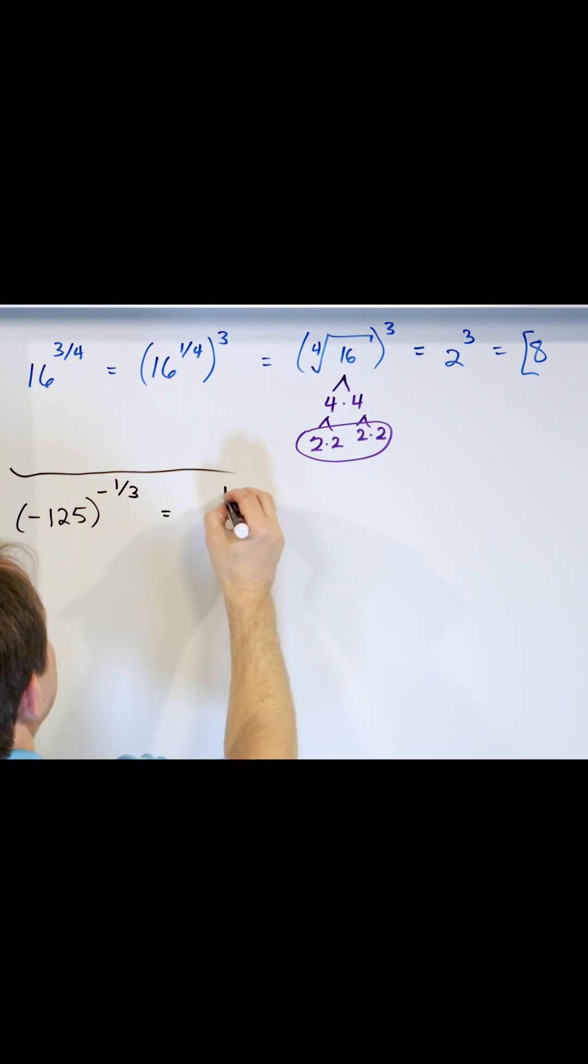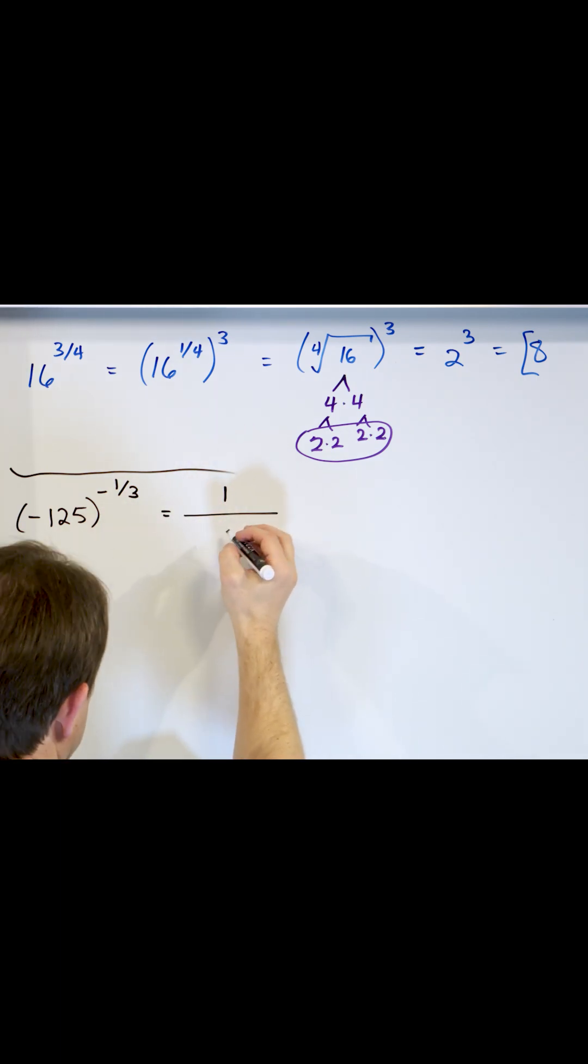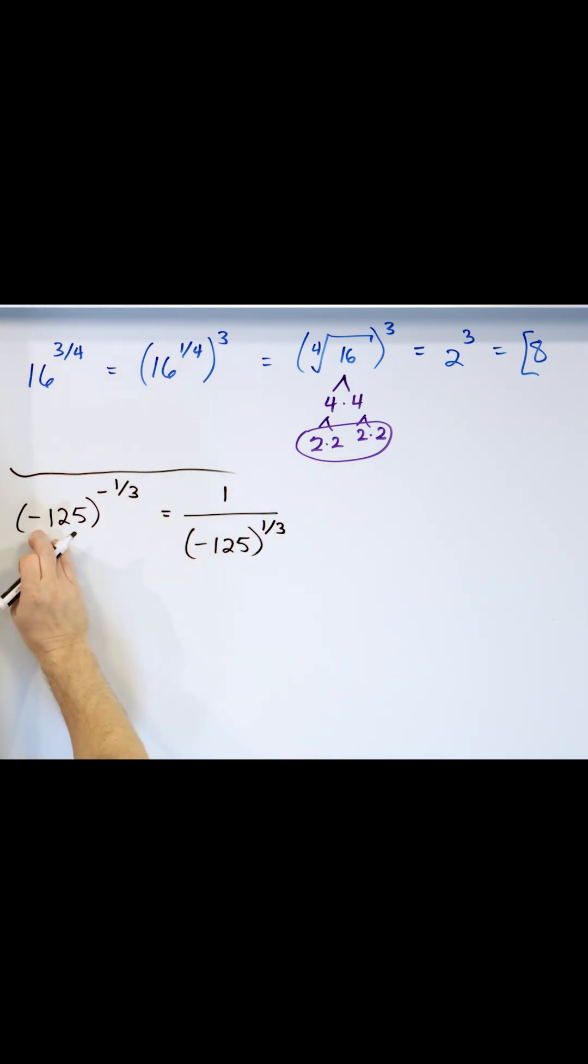Because it's negative, we're going to drop everything below and make it negative 125 to the positive one-third. The negative comes with it because it's in parenthesis, and the negative one-third exponent applies to the whole thing. So you drop the whole thing down, make it a positive exponent.